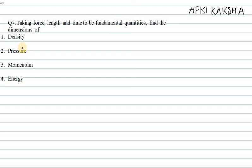Hello everyone, let's start with question number seven. In this case we need to find the dimensions, but we need to take force, length, and time to be the fundamental quantities. The first one is density — density we know is mass over volume.